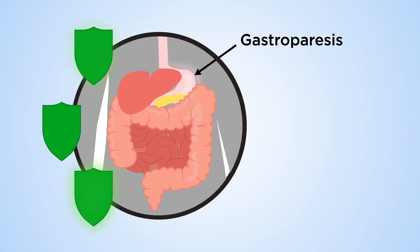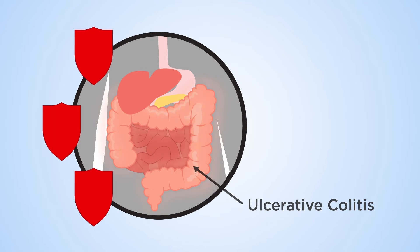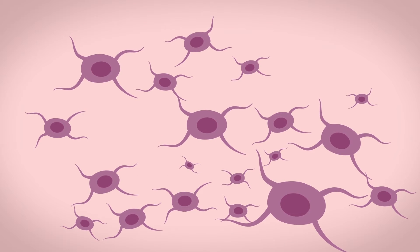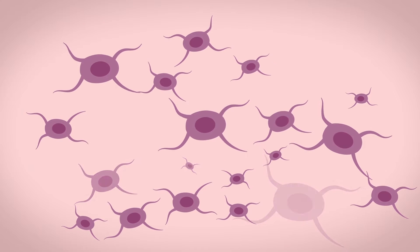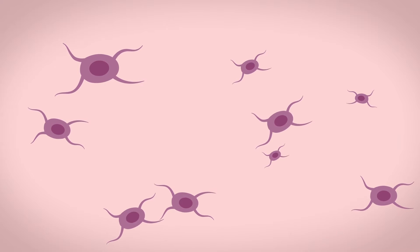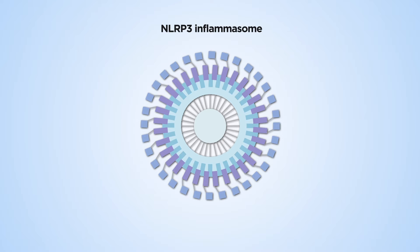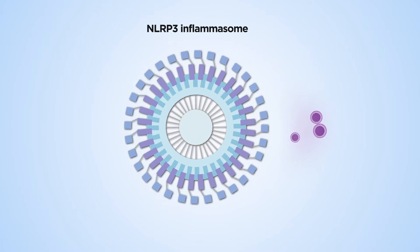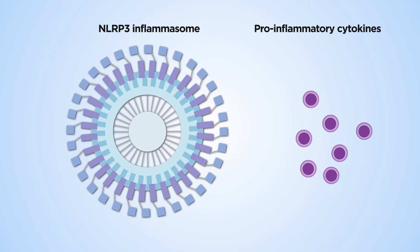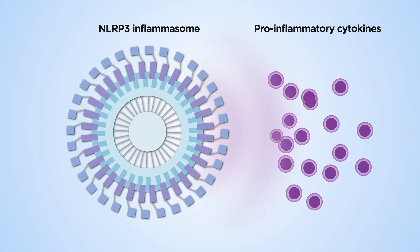Certain inflammatory diseases are linked to the malfunction of innate immunity. Inflammation of the stomach in diabetic patients leads to the loss of interstitial cells of Cajal, which is a hallmark of diabetic gastroparesis. The NLRP3 inflammasome, a multi-protein complex, mediates macrophages to secrete pro-inflammatory cytokines, and aberrant activation of this complex is linked to inflammatory disorders.